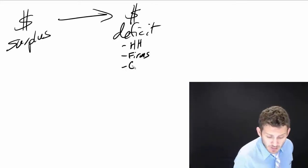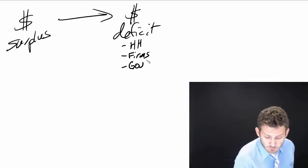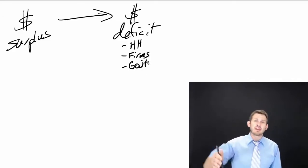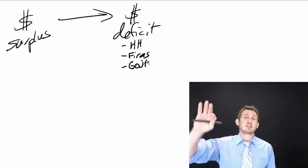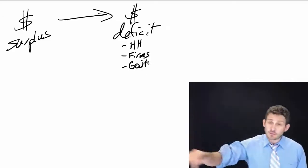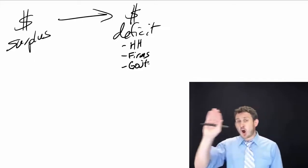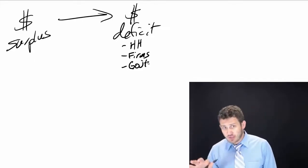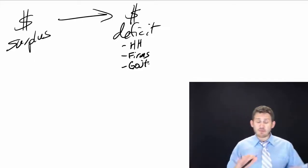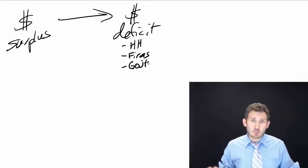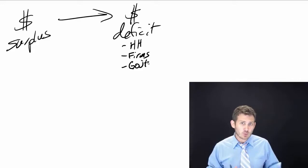Then we're also going to have governments as deficit units. By governments, we mean local, state, county, the federal government, the U.S. federal government, and then all other countries' governments. We have a whole number of governments that borrow.